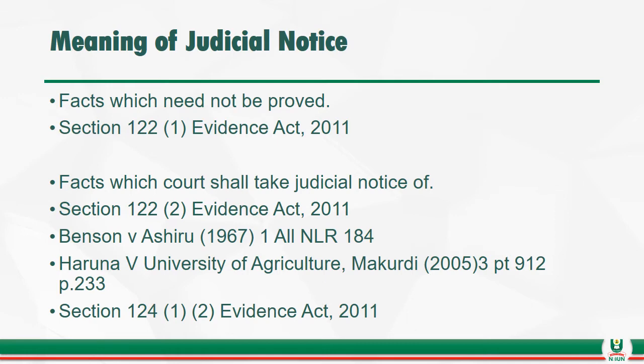The list in subsection 2 also includes: the course of proceedings of the National Assembly and of the Houses of Assembly of the states of Nigeria, the assumption of office of the President, the seals of all the courts of Nigeria, the existence, title and national flag of every state or sovereign recognized by Nigeria, the territories within the Commonwealth, the divisions of time, commencement, continuance and termination of hostilities between the Federal Republic of Nigeria and any other state or body of persons, and the rule of the road on land or at sea.